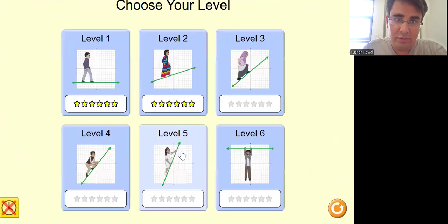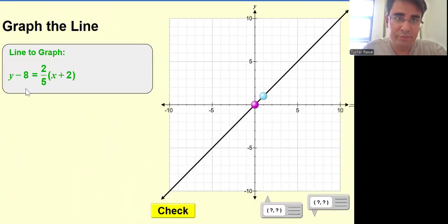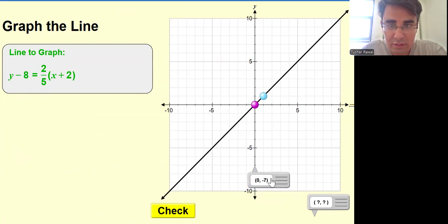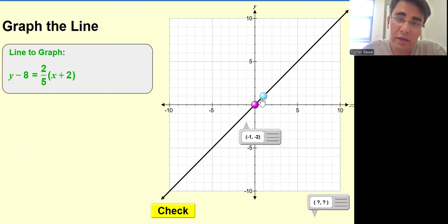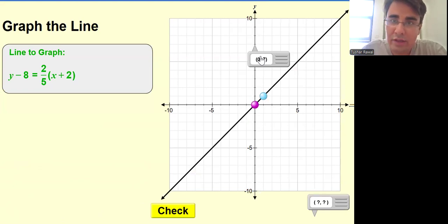So let us go to level three. In case of level three, we need to graph this line. So y minus y1 - so minus eight is my y and x is minus two. Sorry, eight is positive. Y minus y1, so y1 is eight and x is negative two.